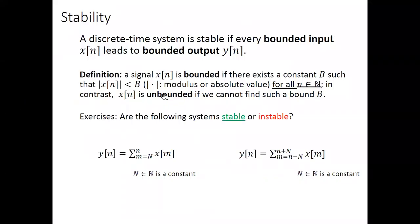The stability property can be extended from continuous time to discrete time systems. The definition is quite the same except we change the time index from continuous to discrete. For a discrete time signal, boundedness means |x[n]| < B for some constant B, for all integers n — both positive and negative.